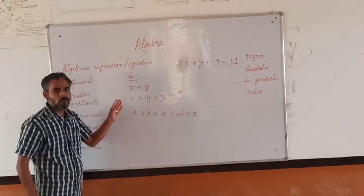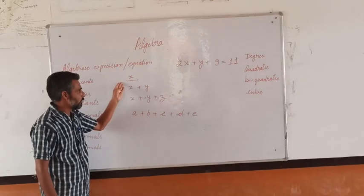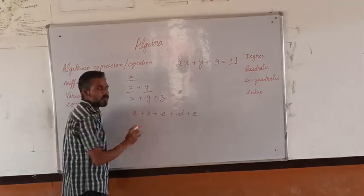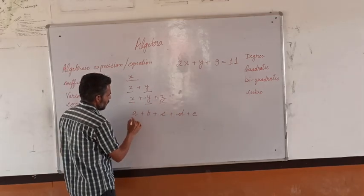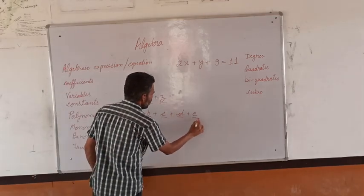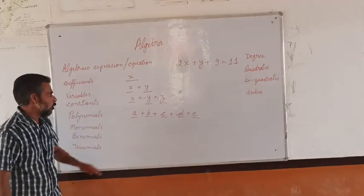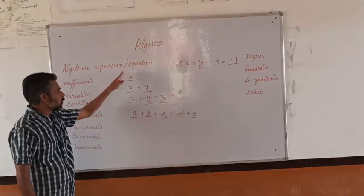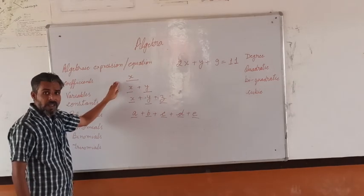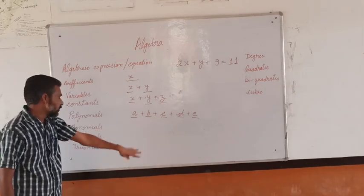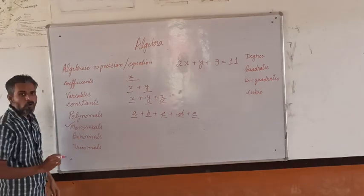How many terms are there? Only one term here. Now here two terms are there. Here three terms, here four terms. All are variables. So this algebraic expression having only one term is known as a monomial.